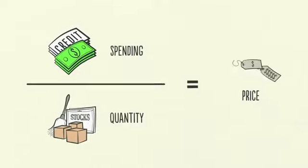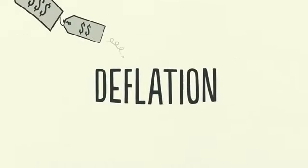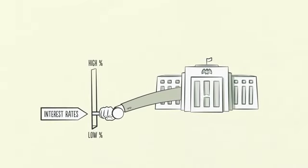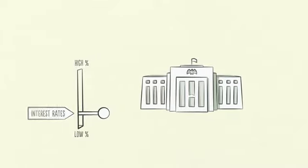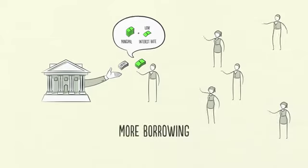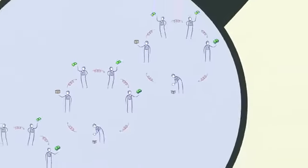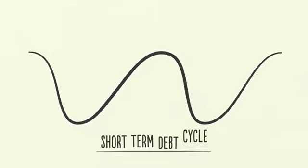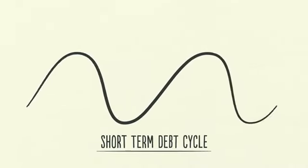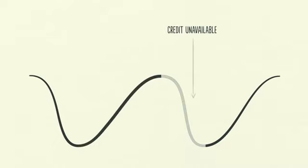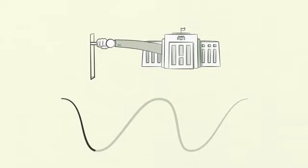When people spend less, prices go down — we call this deflation. Economic activity decreases and we have a recession. If the recession becomes too severe and inflation is no longer a problem, the central bank will lower interest rates to cause everything to pick up again. With low interest rates, debt repayments are reduced and borrowing and spending pick up, and we see another expansion. As you can see, the economy works like a machine. In the short-term debt cycle, spending is constrained only by the willingness of lenders and borrowers to provide and receive credit. When credit is easily available, there's an economic expansion. When credit isn't easily available, there's a recession. And note that this cycle is controlled primarily by the central bank.